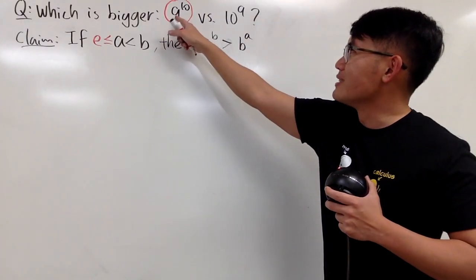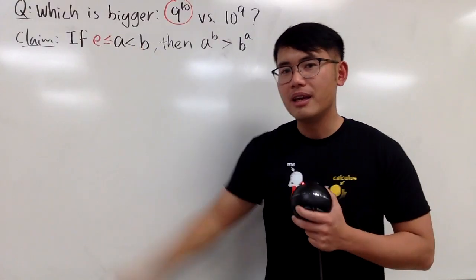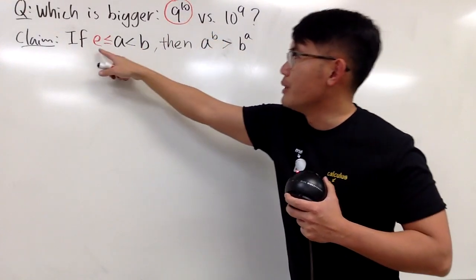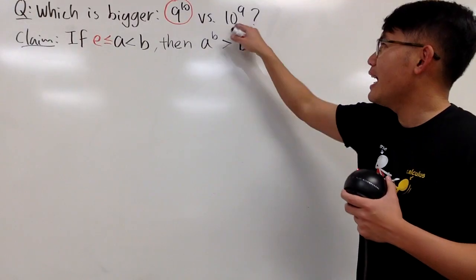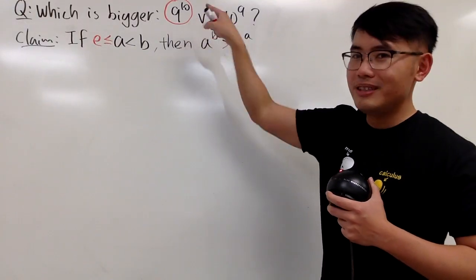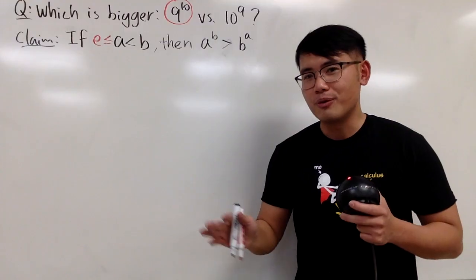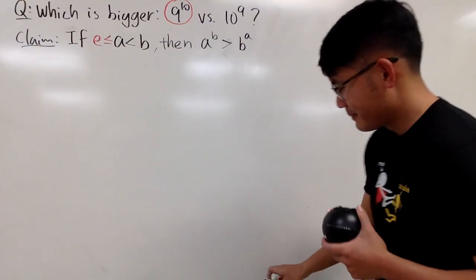A is closer to e than B. In this case, A to the B is bigger than B to the A. And I know this is not a good inequality symbol. Let me just write it down better. So this is my claim. And as you can see, of course, 9 and 10 are both bigger than e.